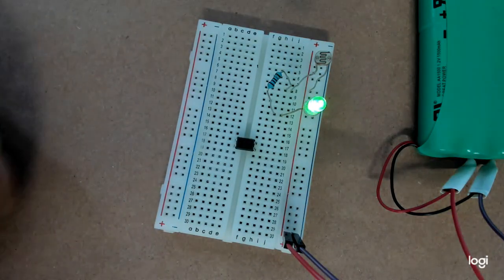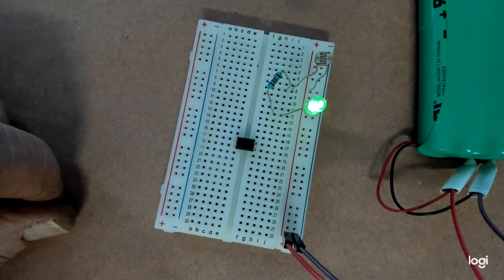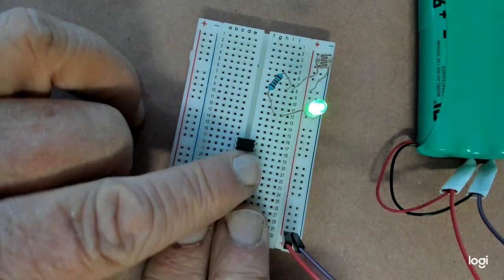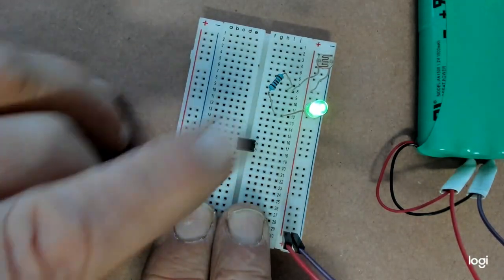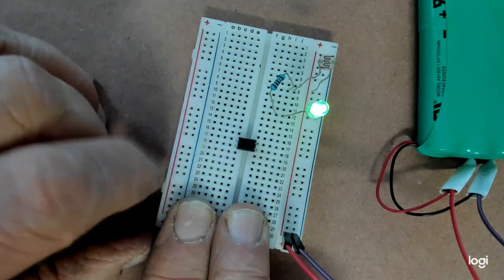So, if I take my finger off, the LED lights back up. So, that's the main principle of an optocoupler, well, the H17B.